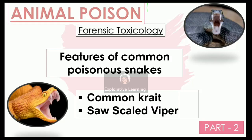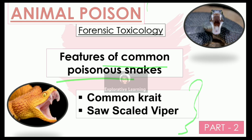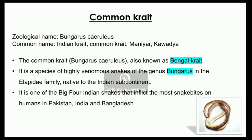Hello everyone, I hope you guys are doing absolutely fine. Today we will discuss about animal poison. Here I will be talking about some of the common features of poisonous snakes. We've already discussed about common cobra and banded krait in part one of the lecture — if you haven't watched it, go check it out.